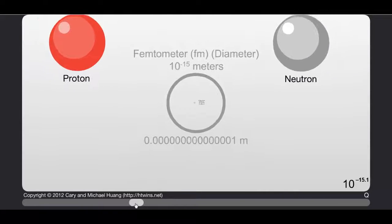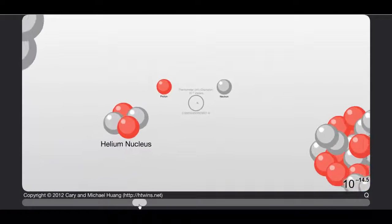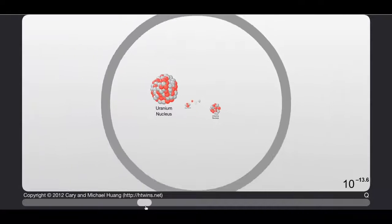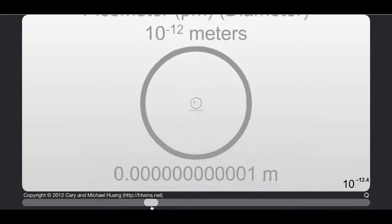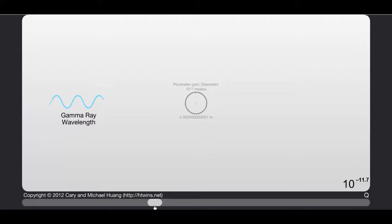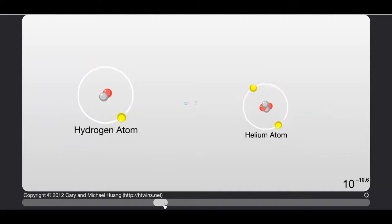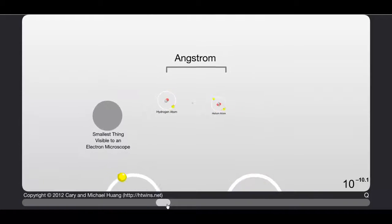Neutron, proton, these are the things I know. There we go, helium nucleus. That's intense. That's why we got a good atmosphere to keep those things away from us. Helium, hydrogen. I don't know what an angstrom is. Smallest thing visible to an electron microscope.